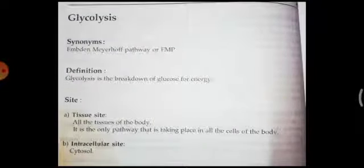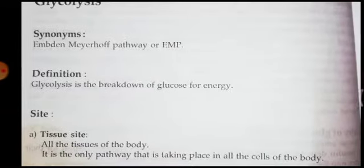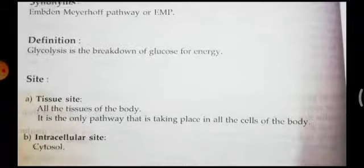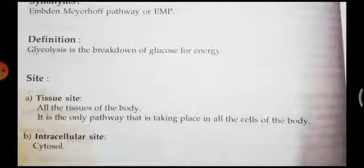Let us now discuss glycolysis. First, observe the name: glyco means glucose and lysis means breakdown. It is also called by synonym names — the Embden-Meyerhof pathway, or EMP. Definition: glycolysis is the breakdown of glucose for energy. Carbohydrate is the source of energy, and in carbohydrates, glucose is the main component. Glycolysis brings about or derives energy from glucose.